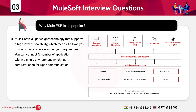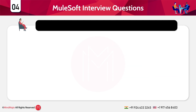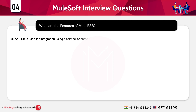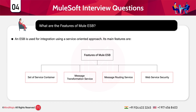What are the features of Mule ESB? ESB is used for integration using a service-oriented approach. The key features include: a set of service containers, message transformation service, message routing service, and web service security. If the interviewer asks you to elaborate these points, that is mostly done for experienced candidates. If you're a fresher, you can just mention the features.